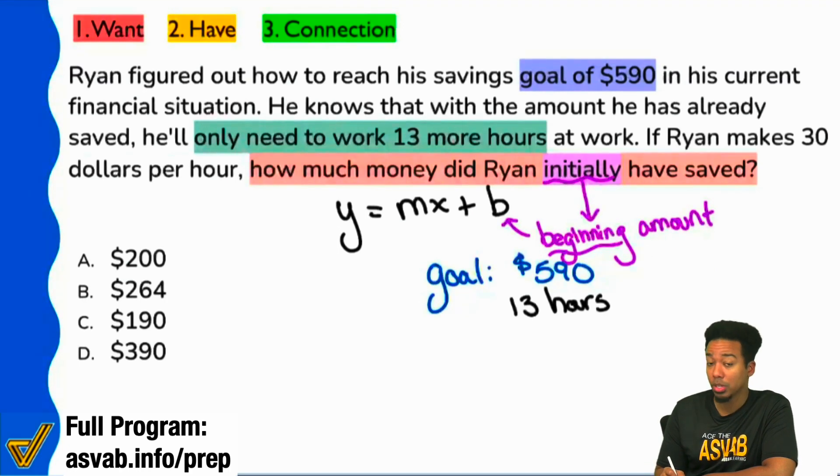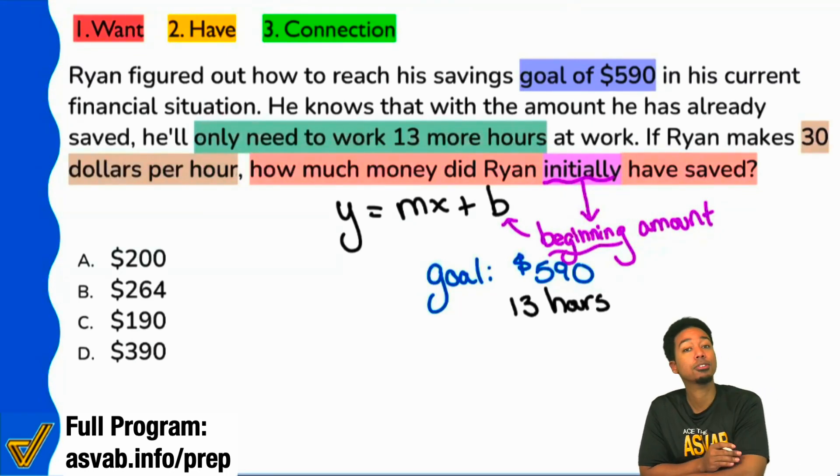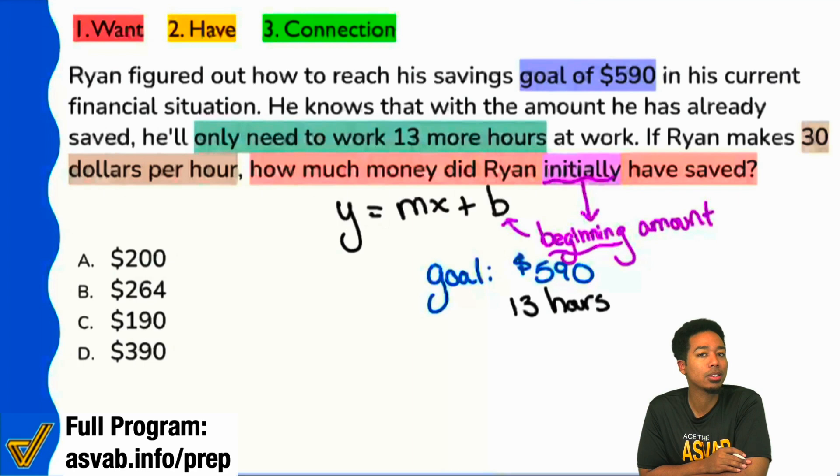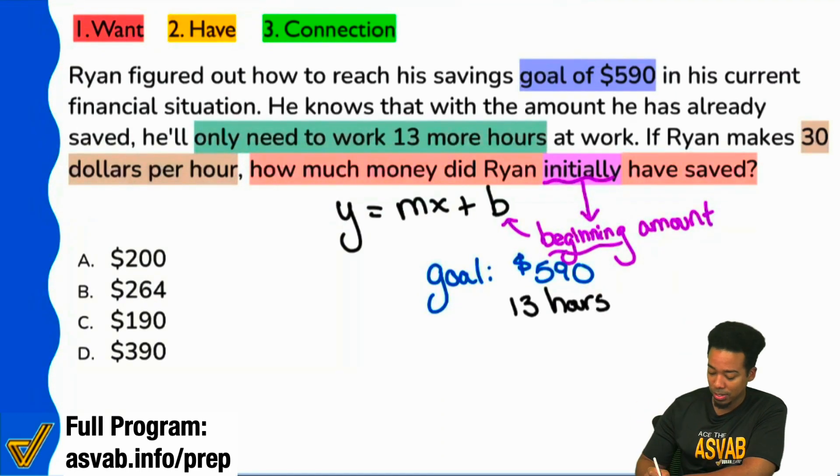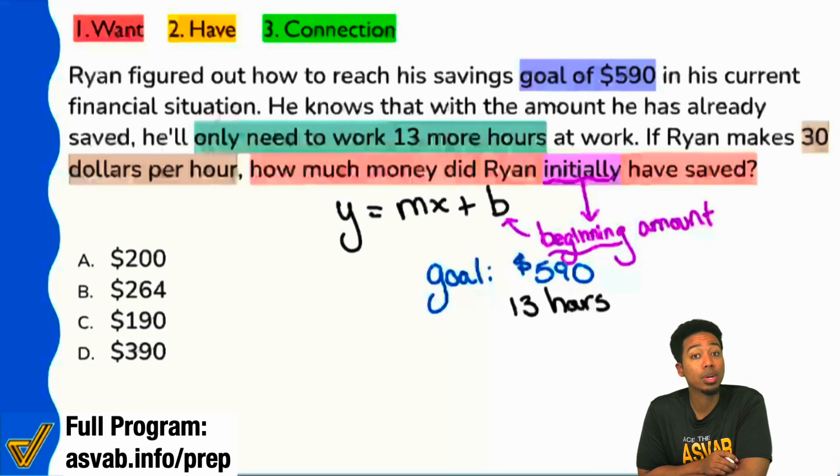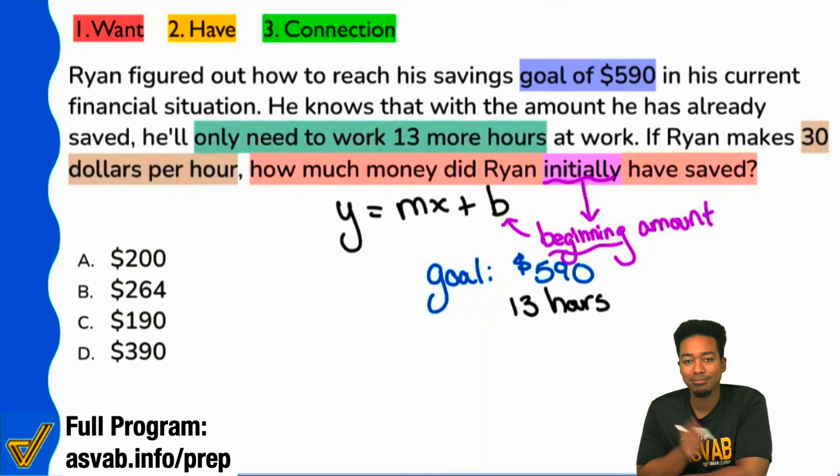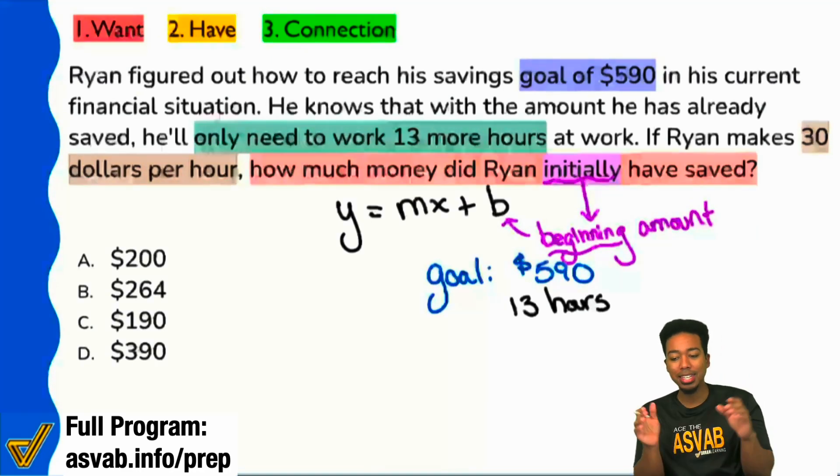Yeah, that's a time. That's how much time passes. So we have 13 hours. And then lastly, this is really truly what ties everything in - it's this right here. If Ryan makes $30 per hour, that right there is what gives you everything you need to say, hey yeah, we're dealing with a y equals mx plus b problem. So everyone, what's the one word in that brown highlight that gives it away? $30 per hour, what's the one word that gives it away in there?